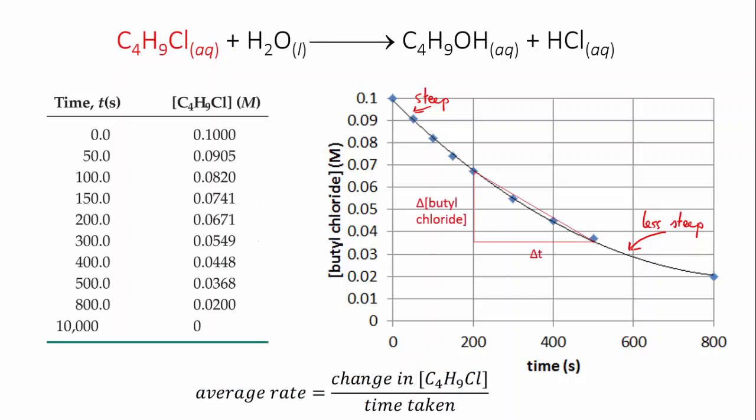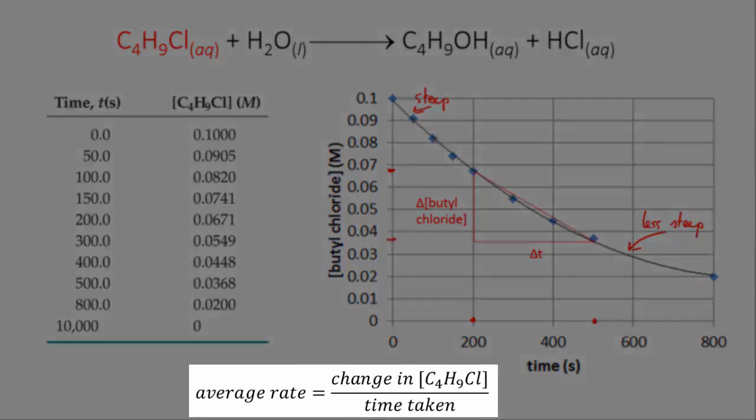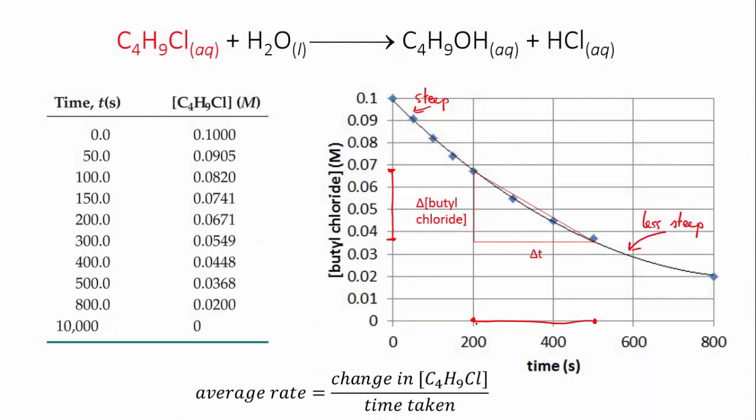So say we choose the time interval from 200 to 500 seconds. Then for that change in time, that's 300 seconds, we work out how much the concentration change. And then we divide one by the other. And that gives us the average rate for that time period.